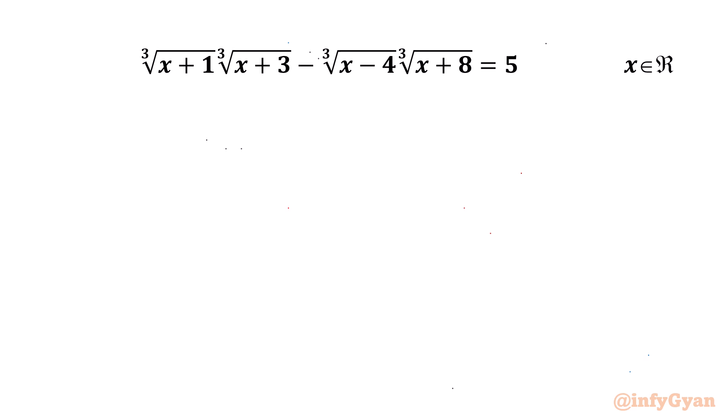Hello everyone. Welcome back to Infigyan. In this video we are going to solve one very interesting radical equation. It is cube root of (x+1) times cube root of (x+3) minus cube root of (x-4) times cube root of (x+8) equal to 5. And we are going to calculate all real solutions.